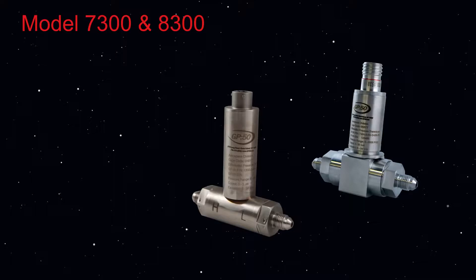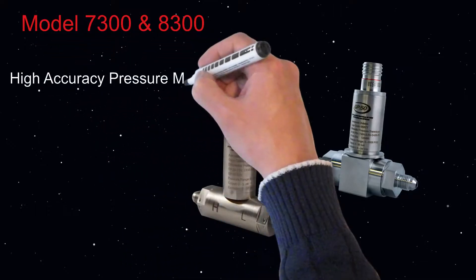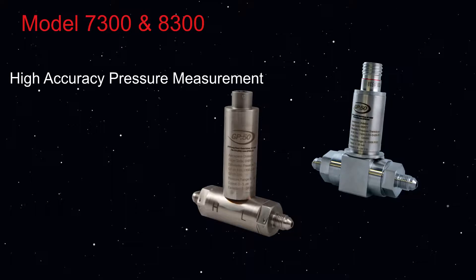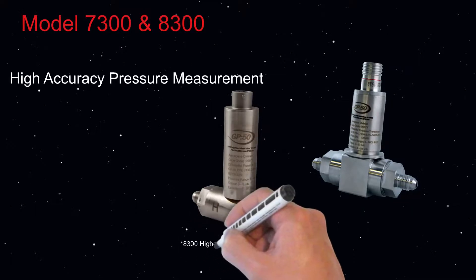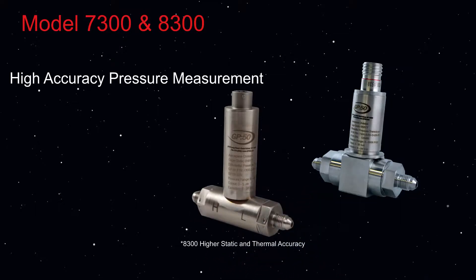The Model 7300 and 8300 Flight Heritage Differential Flight Transducers provide high-accuracy pressure measurement, while the Model 8300 is equipped with an enhanced correction to provide higher static and thermal accuracy.